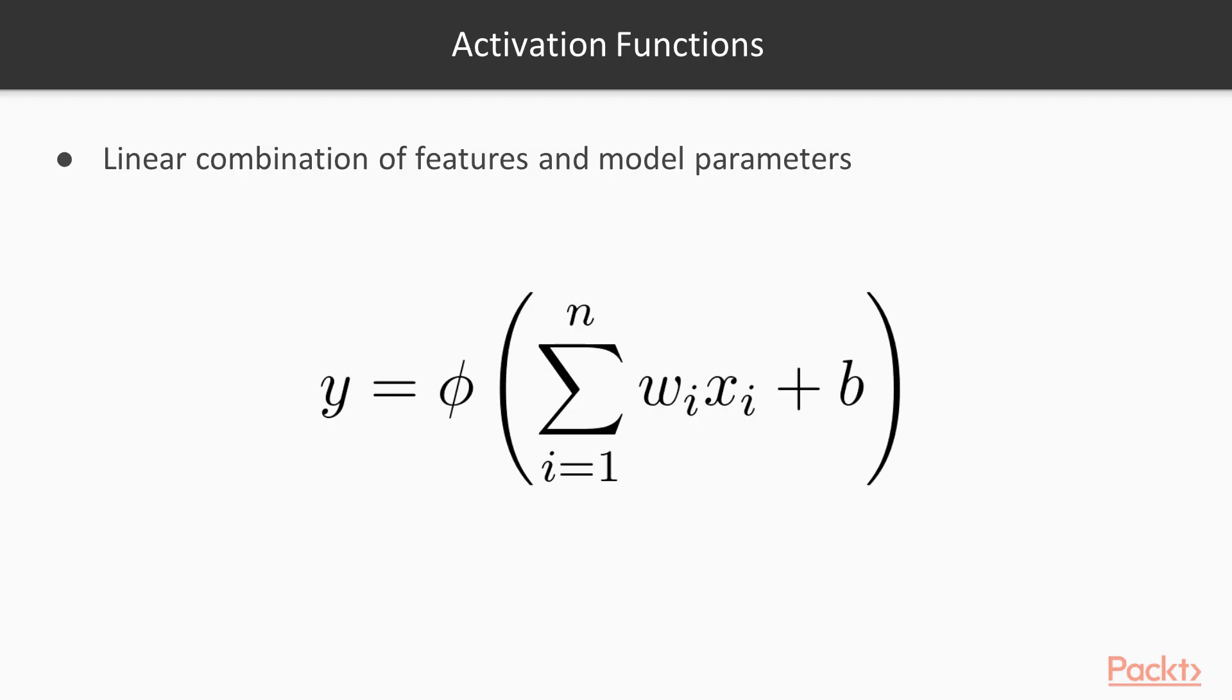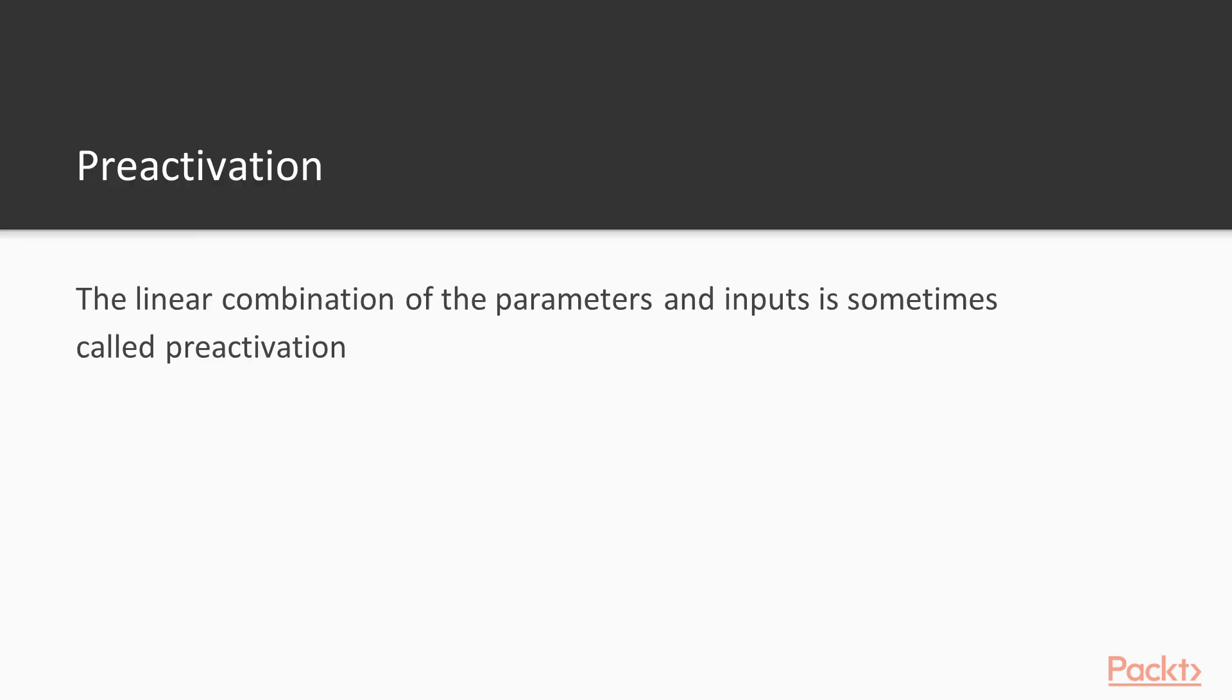Our next topic is activation functions. The perceptron classifies instances by processing a linear combination of the features and the model parameters using an activation function, as shown in this equation. Here, WI are the model's parameters. B is a constant bias term, and PHI is the activation function. The linear combination of the parameters and inputs is sometimes called pre-activation. Several different activation functions are commonly used.